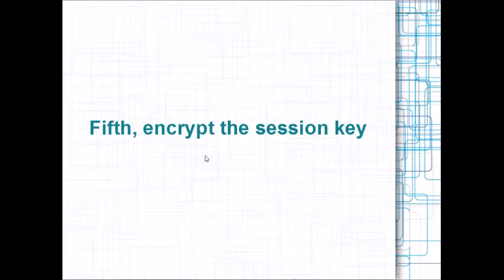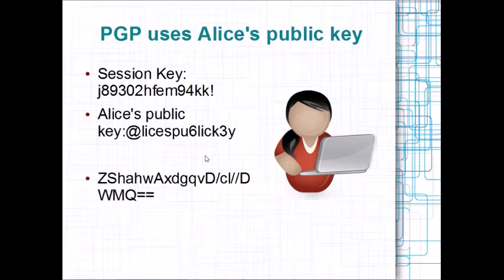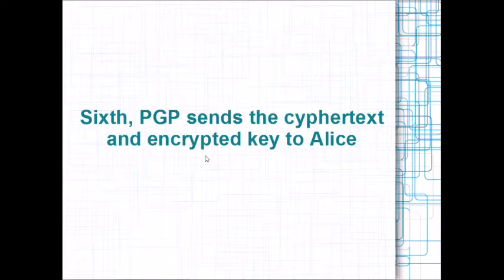In the fifth step, we're going to encrypt our session key. We're going to grab Alice's public key and use that to encrypt the session key. With that encrypted key, we're going to send that over the network as well.